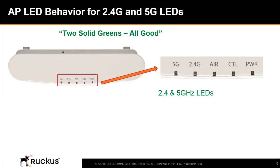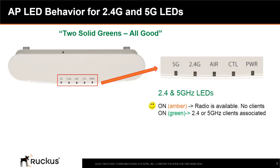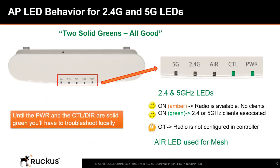Once the power and Control or DIR LEDs are solid green, the 2.4 and 5 GHz LEDs will illuminate in amber, indicating that both bands are available and ready to serve clients. As soon as clients associate to the respective bands, these LEDs will change from amber to green. If the 2.4 and 5 GHz LEDs are off, it means no SSIDs are configured on the Ruckus Cloud for this venue. Until the power and control LEDs are solid green, you'll need to troubleshoot locally, and if you can't get the AP to connect to the cloud controller, manually configure the AP as described in the quick setup guide.